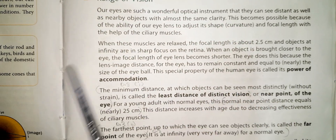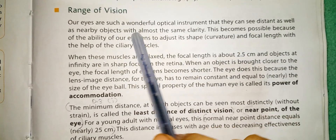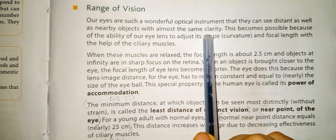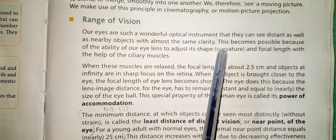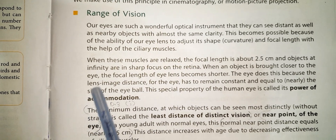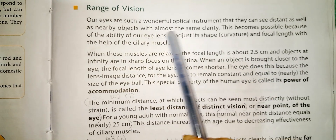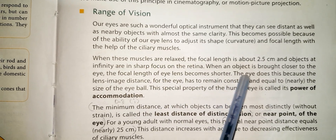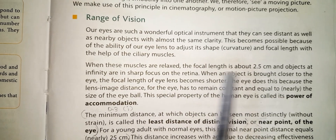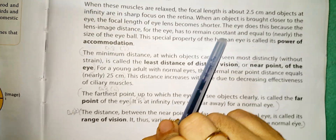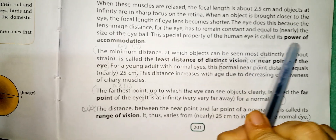Our eyes are such a wonderful optical instrument that they can see distant as well as nearby objects with almost equal clarity. This becomes possible because of the ability of our eye lens to adjust its shape, curvature, and focal length with the help of the ciliary muscle. When these muscles are relaxed, the focal length is about 2.5 cm and objects at infinity are in sharp focus on the retina. When an object is brought closer to the eye, the focal length of the eye lens becomes shorter, since the image distance for the eye must remain constant and equal to nearly the size of the eyeball. This special property of the human eye is called the power of accommodation.